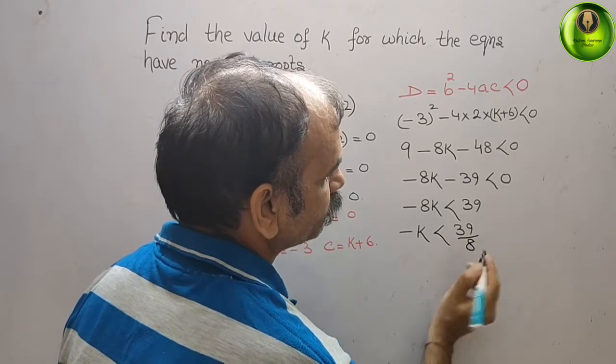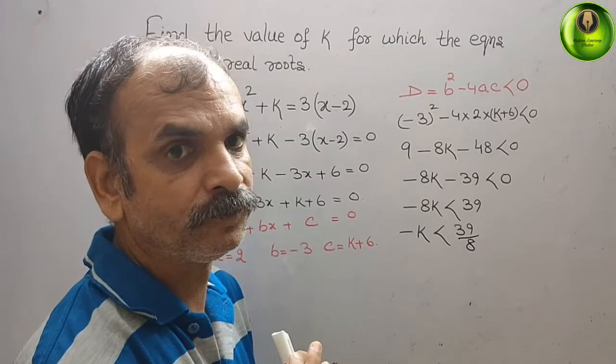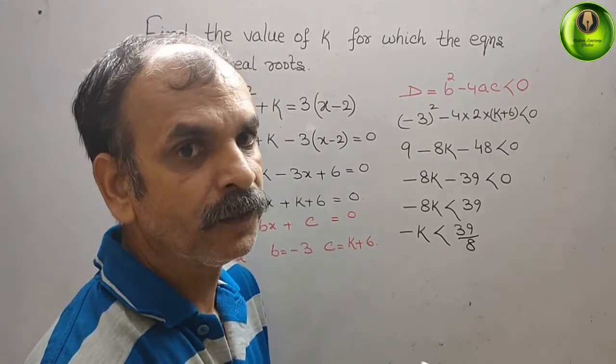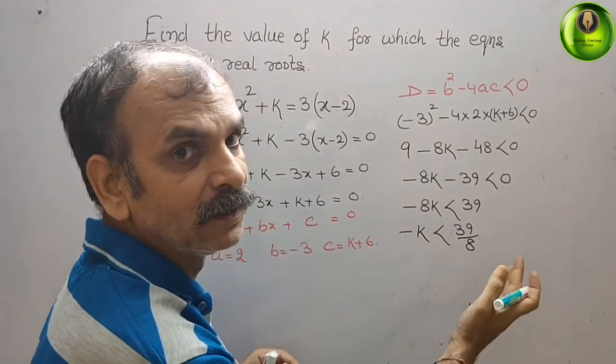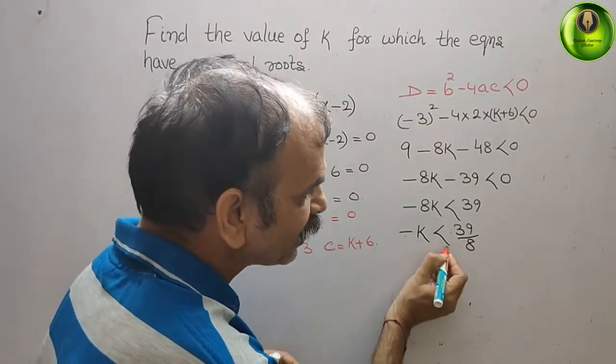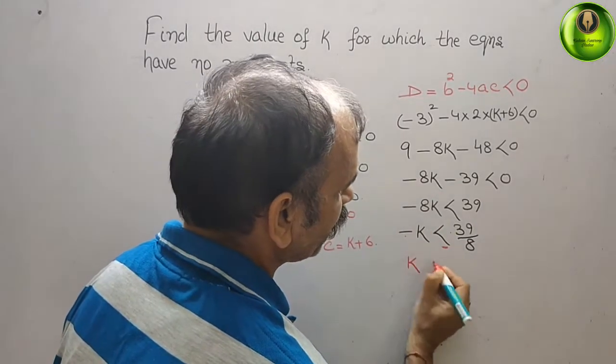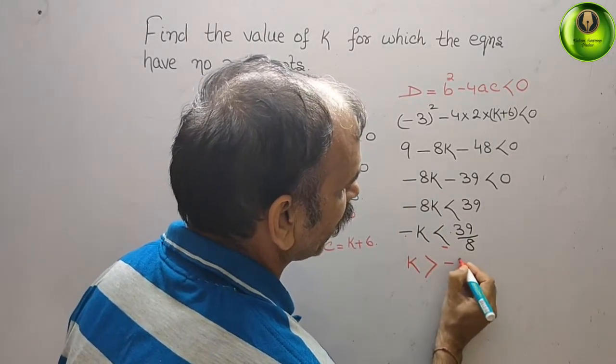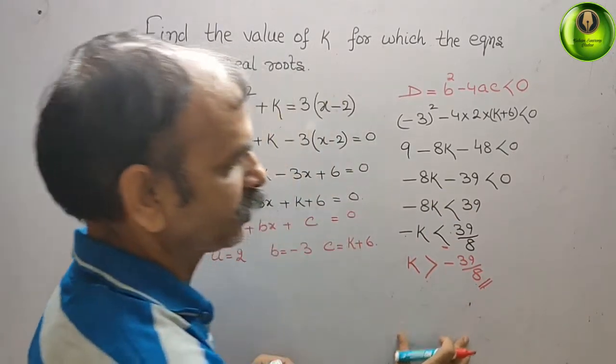This minus sign will change the sign of the right side, and the inequality sign will also get changed. So k > -39/8. This is your answer.